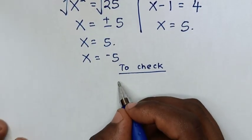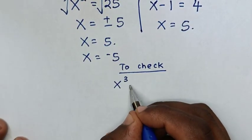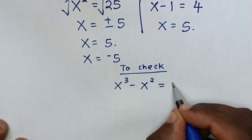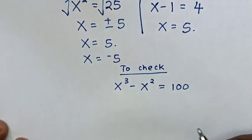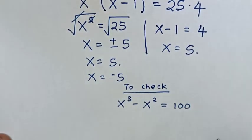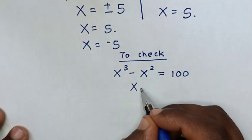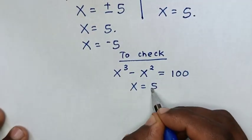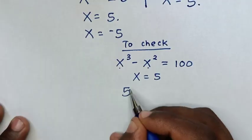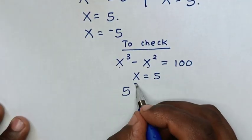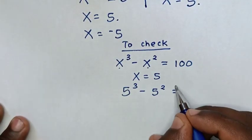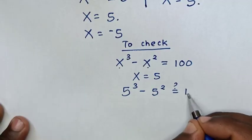Now to check, from our problem x power 3 minus x power 2 is equal to 100, we substitute the value of x which is equal to 5. So it will be 5 power 3 minus 5 power 2 is equal to 100.